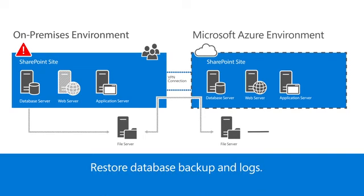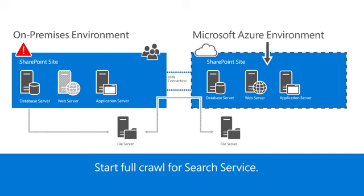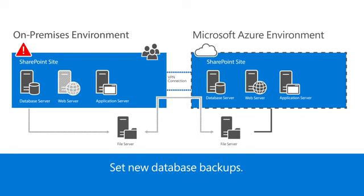Restore the SQL backup and replay the transaction logs in the order they were created using the replicated files. Manually attach the SharePoint database to your web application, which causes SharePoint to recognize the restored site. Start a full crawl on each content source to update the search service. Set backups for the new SQL database so you have all the data needed to switch back to the on-premises environment later.